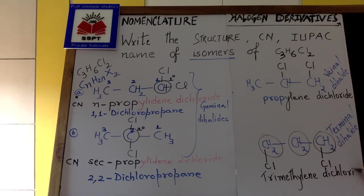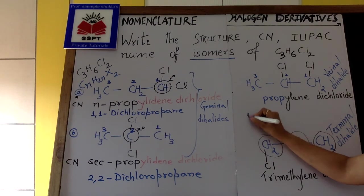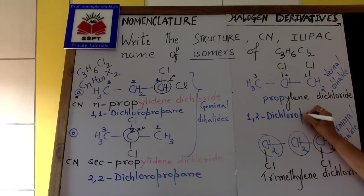Now, we write the IUPAC name of the two structures. We number the long chain. One, two, three. So the name becomes one comma two dash dichloropropane. One comma two dash dichloropropane.